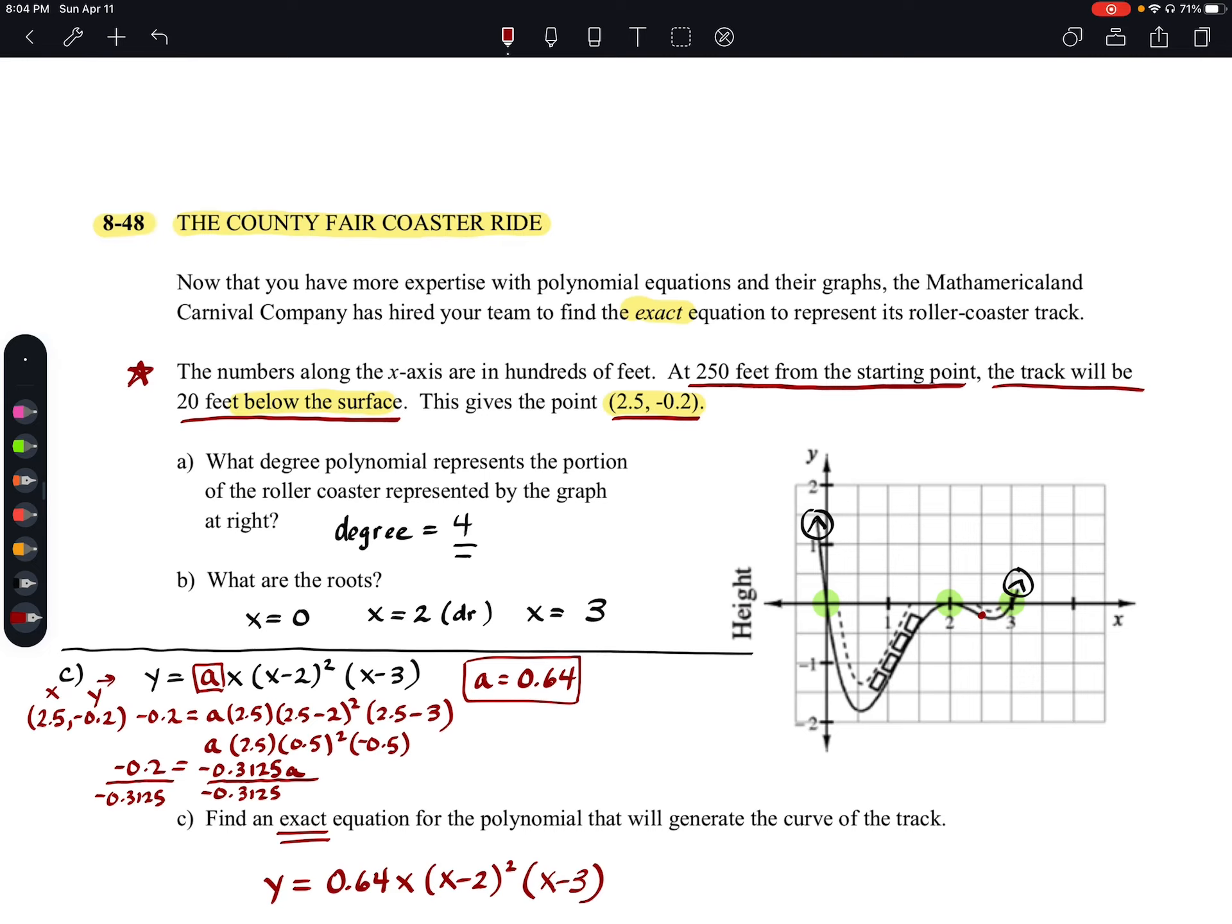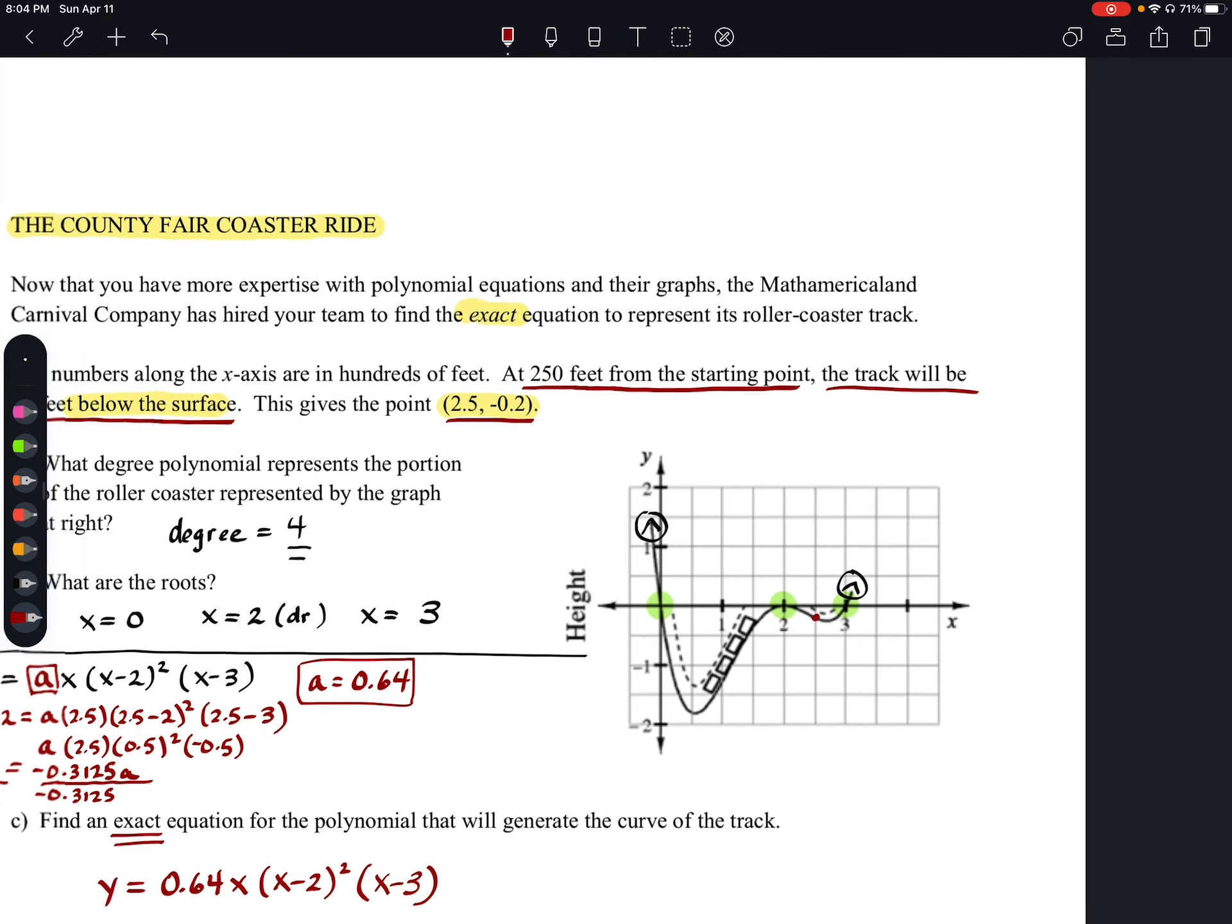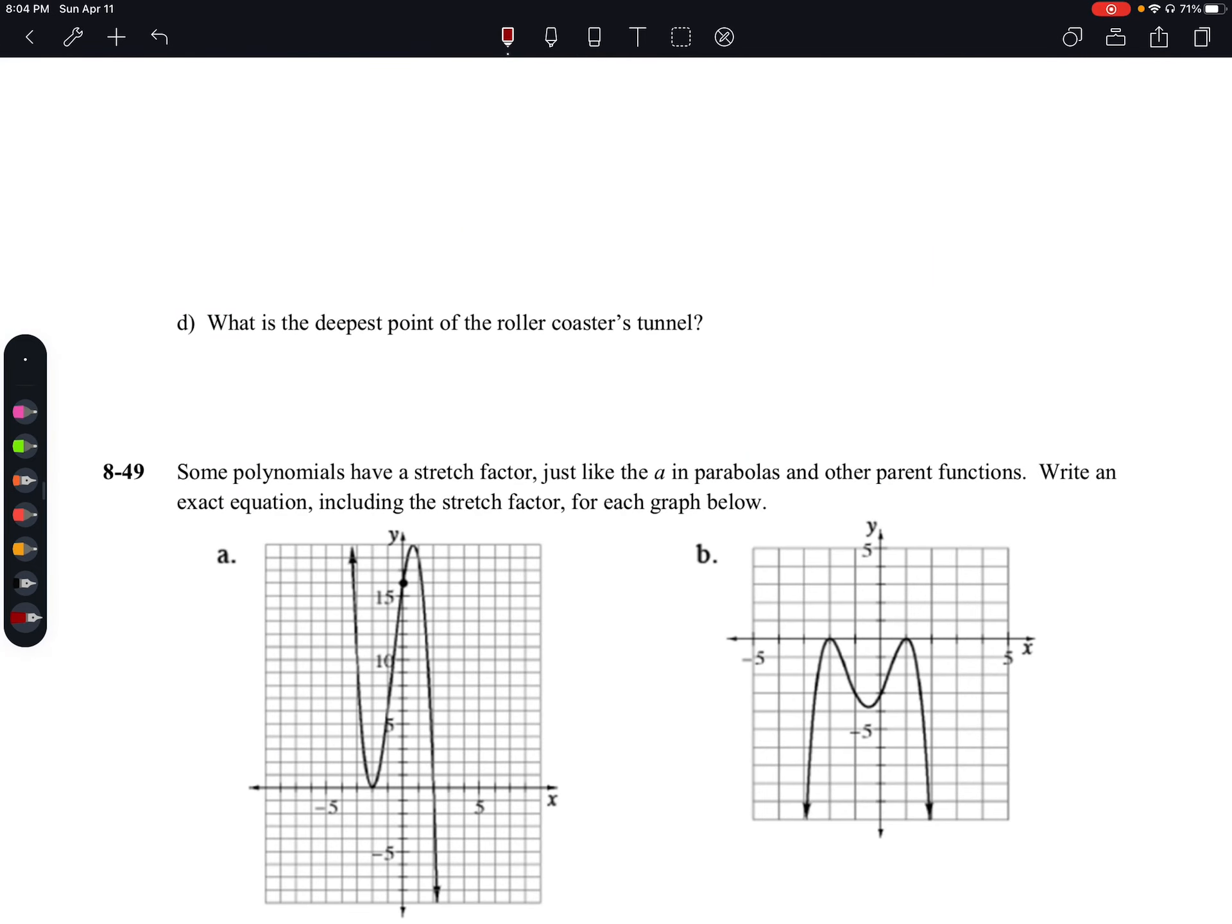I think there is one more little part to this one. And it might be on that next page. I think we have 8-48b. So I'm actually going to switch over to the next page. It says, what is the deepest point of the roller coaster tunnel? So I'm going to jump back over.